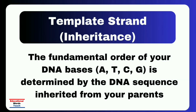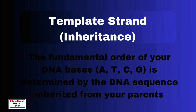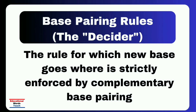The second mechanism is base pairing rules — the decider. The rule for which new base goes where is strictly enforced by complementary base pairing: A always pairs with T, and G always pairs with C. During DNA replication, the enzyme DNA polymerase moves along the template strand and only allows the correct complementary base to be inserted into the new growing strand. This mechanism ensures the daughter DNA molecule is an exact copy of the original.